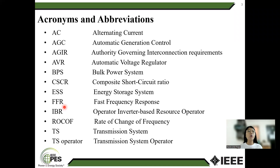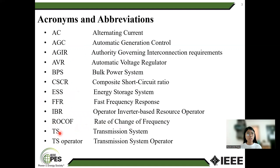Here is the glossary of electrical terms. AC: alternating current. AGC: automatic generation control. AGIR: authority governing interconnection requirement. AVR: automatic voltage regulator. BPS: bulk power system. CSCR: composite short-circuit ratio. ESS: energy storage system. FFR: fast frequency response. IBRO: inverter-based resource operator. ROCOF: rate of change of frequency. TSO: transmission system operator.